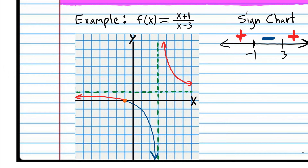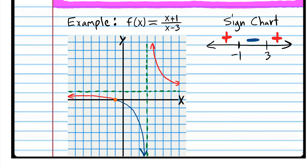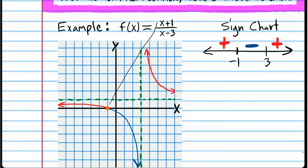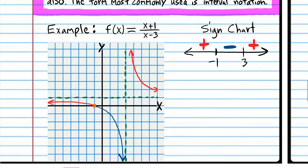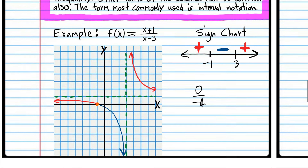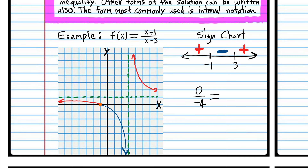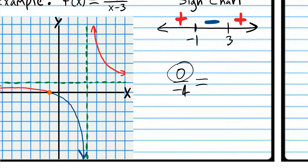To demonstrate why that is, we'll graph a rational expression. We have an x value, negative one, that makes the expression zero because it makes the numerator zero. When you plug in negative one, the numerator of the fraction is zero, which means the fraction is zero. Remember, if we plug in negative one we get zero over negative four. When you have zero in the numerator and a nonzero denominator, the value of the fraction is always zero.